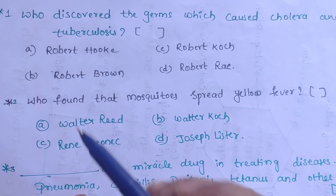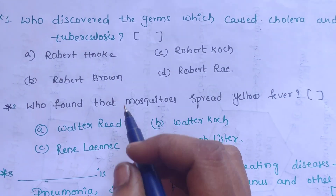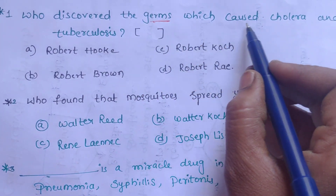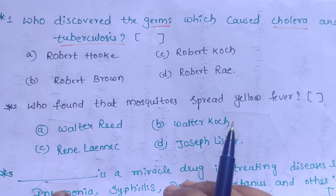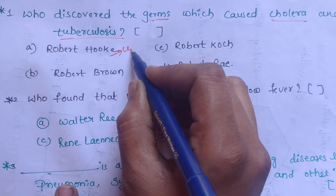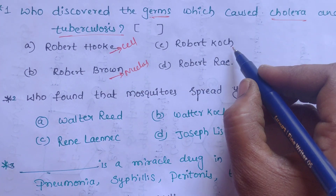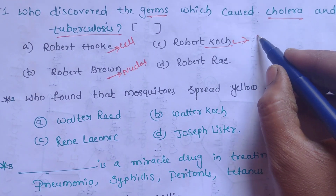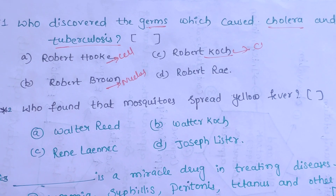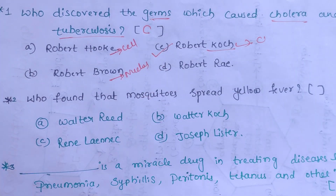The first question is: who discovered the germs which caused cholera and tuberculosis? Robert Hooke is known for the cell, and Robert Brown is known for the nucleus. Robert Koch identified the germs which cause cholera and tuberculosis. So our correct answer is Option C.